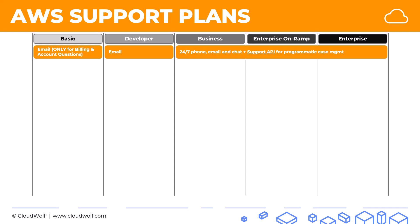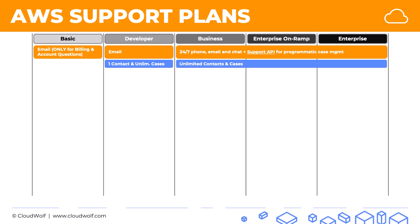In terms of contacts and cases: in the basic plan you don't have any. In the developer plan you have one contact and unlimited cases — meaning only one person on your team can contact AWS support, though you can raise an unlimited number of cases. In the other three plans on the right, you have unlimited contacts, so as many people as you like can contact support and have unlimited cases open.